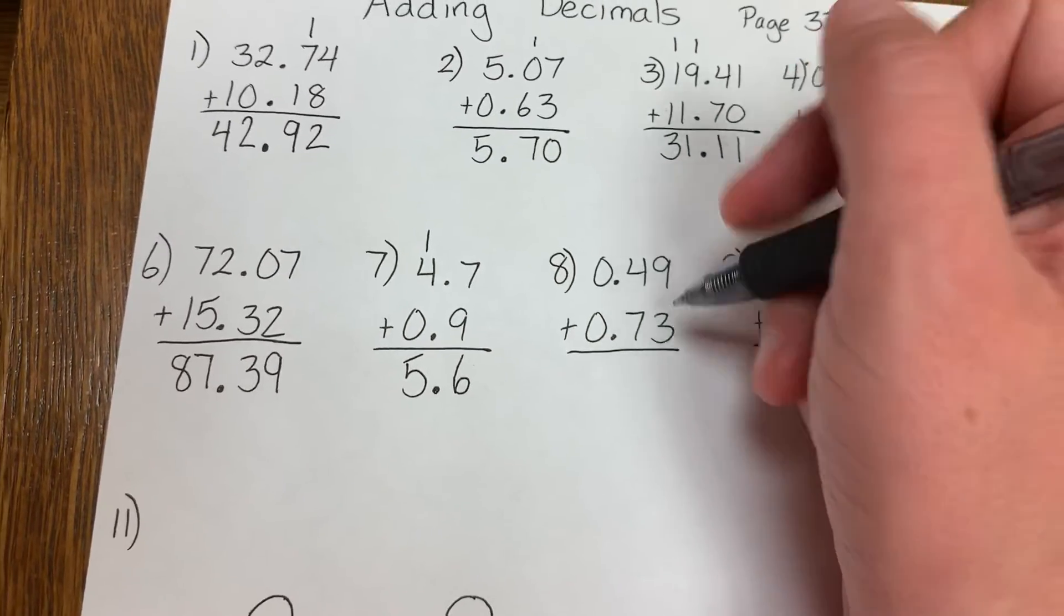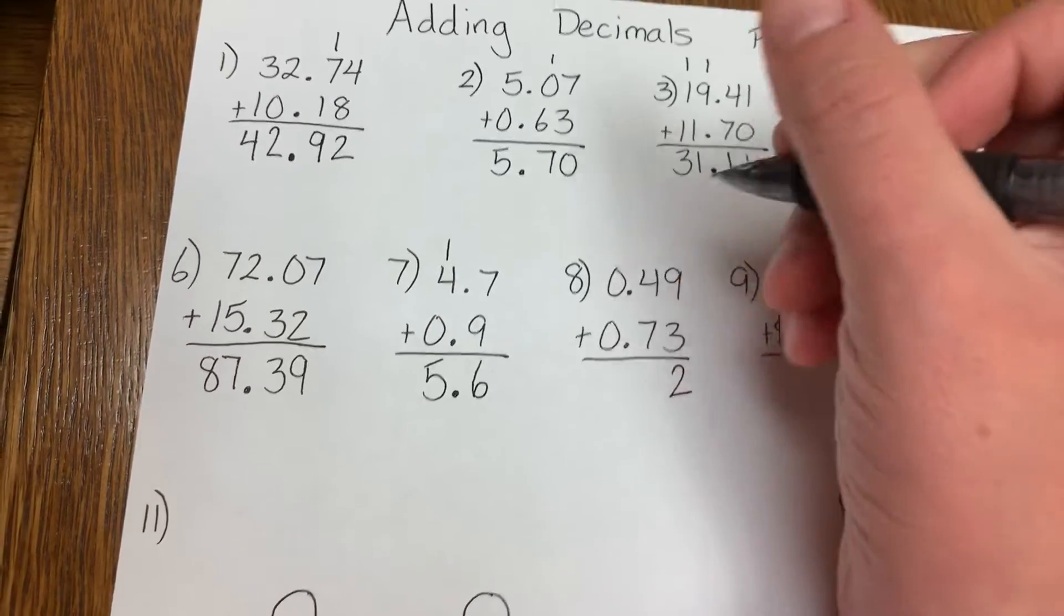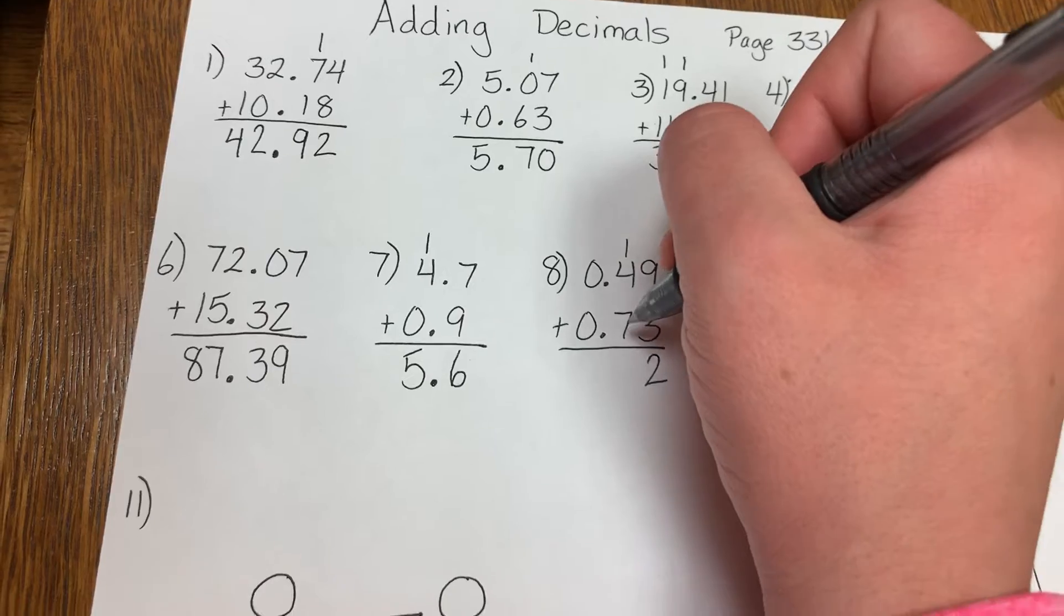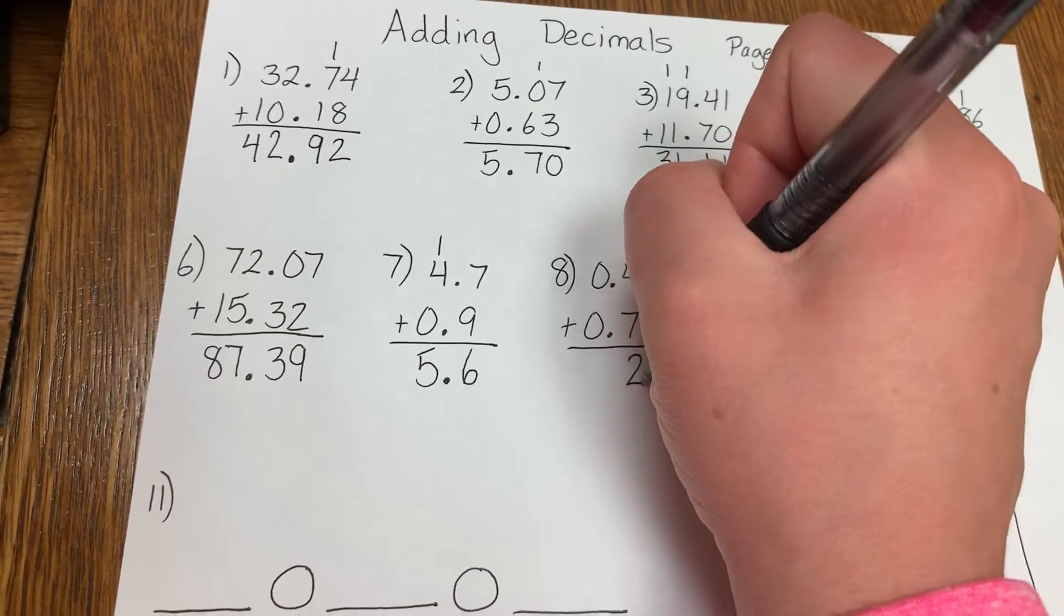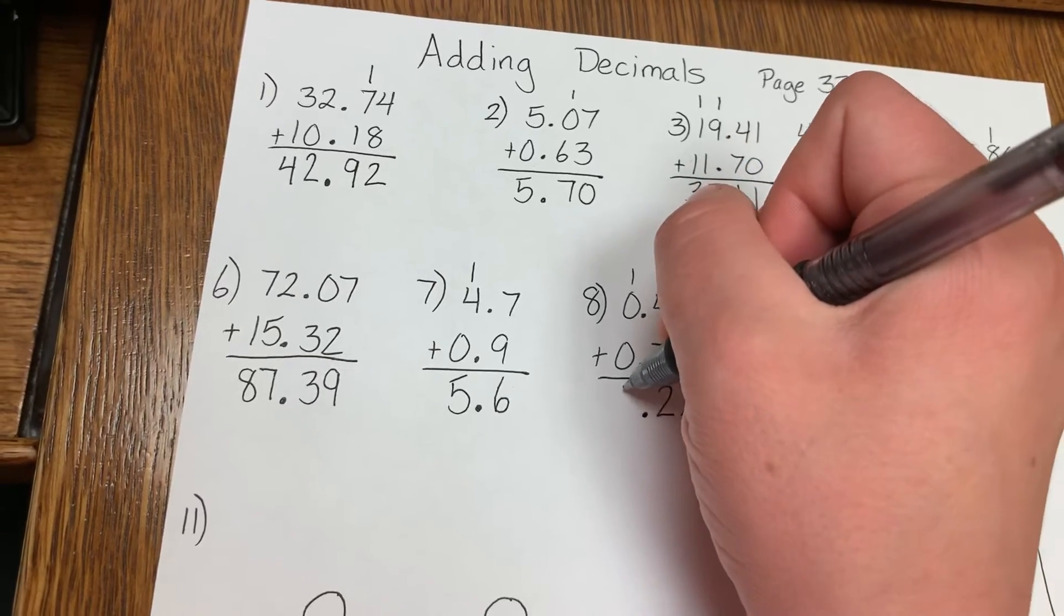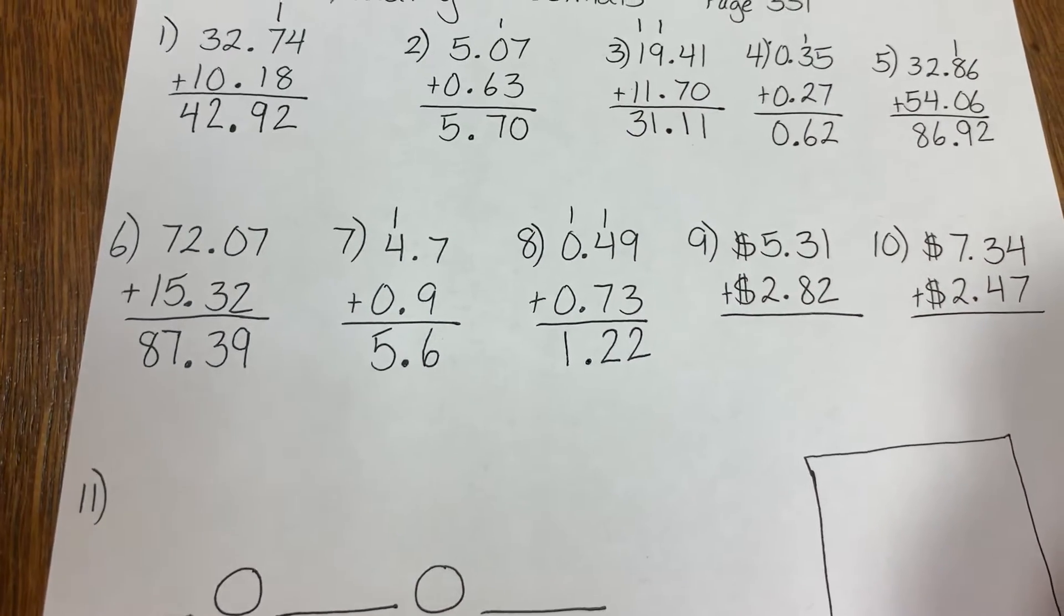Number 8: 9 plus 3 is 12. 2 down, carry the 1. 1 plus 4 is 5. 5 plus 7 is 12. 2 down, carry the 1. Bring down your decimal. And 1 plus 0 is 1. So your answer is 1.22.